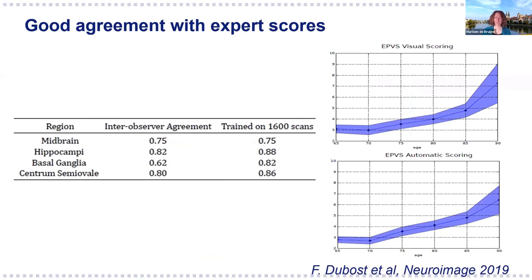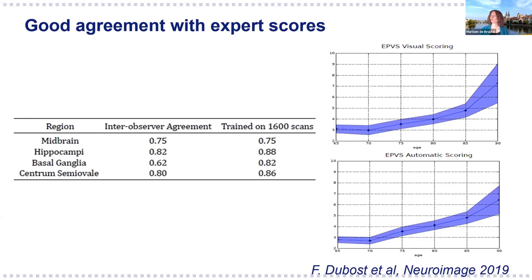This model had very good agreement with expert scores, similar to the inter-observer agreement. It was trained on a large number of scans—1,600 scans from the Rotterdam Scan Study, which has 1,000 participants followed over time with regular MRI. Looking at learning curves, performance is still quite good when training on just 400 scans, though a little lower. It does still help to use more scans, but on the other hand, these labels are easy to obtain—our collaborators are already doing this on a regular basis for their clinical studies. The model was also more reproducible than experts when applied to new images from the same patient taken a few months later.